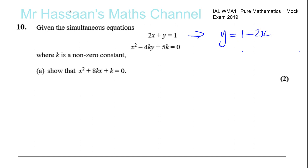It's possible to make x the subject as well, but the problem with that is you'll end up with a fraction — you'll have x equals 1 minus y over 2. Here, y equals 1 minus 2x has no fraction to deal with.